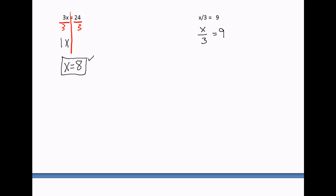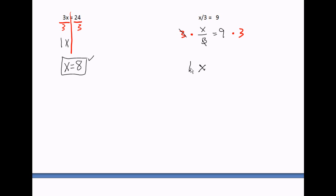Now I have x divided by three equals nine. What is the three doing on this side? It's dividing. The opposite of dividing by three is multiplying by three. So I'm going to multiply the left side by three and multiply the right side by three. Three on top, three on the bottom — they cancel out. It's like saying three divided by three.